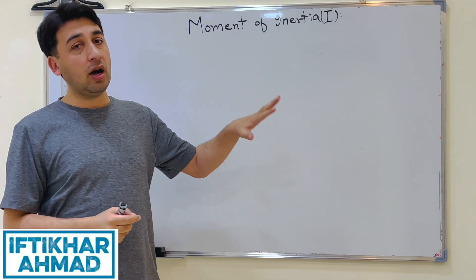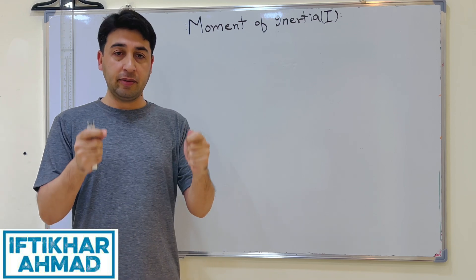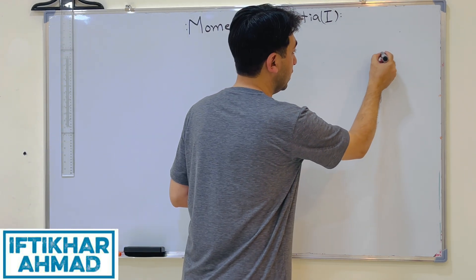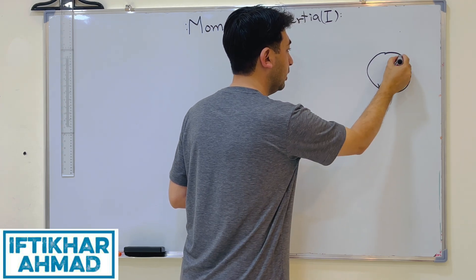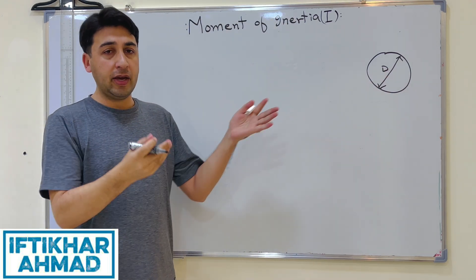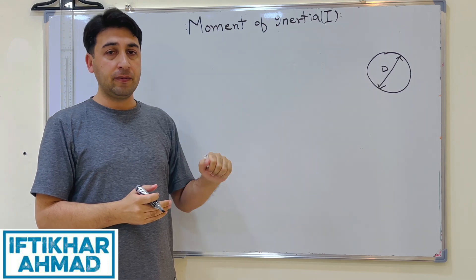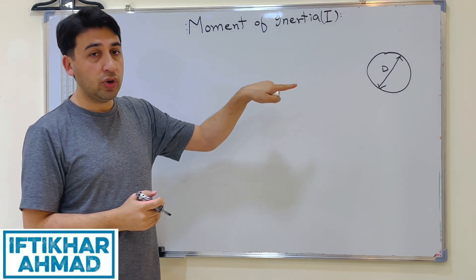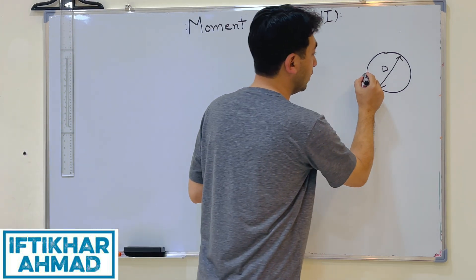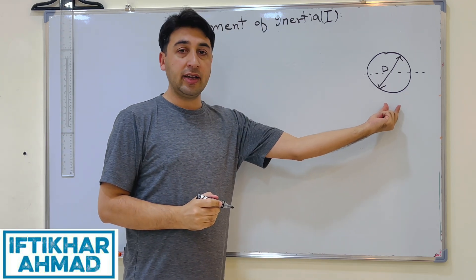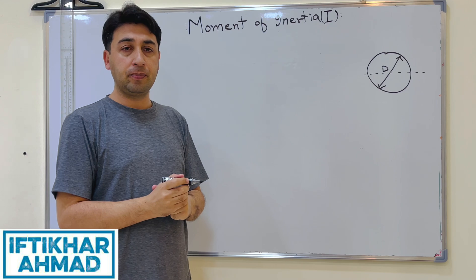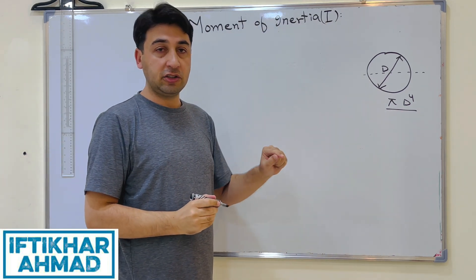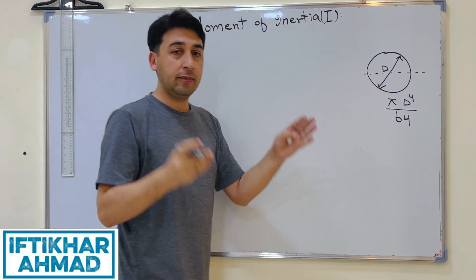Similar to the centroid, the moment of inertia of common geometrical shapes is provided in a table, calculated by integral calculus. For example, if the cross-sectional area of a beam is a circle with diameter D, the moment of inertia about the horizontal centroidal axis is πD⁴/64. This is already provided in your textbook.